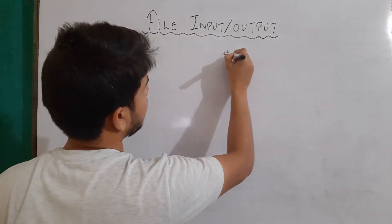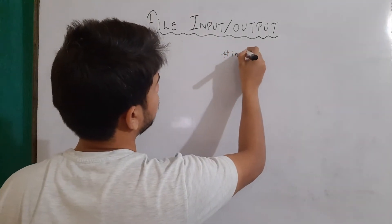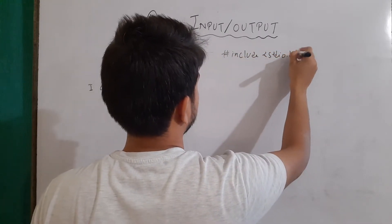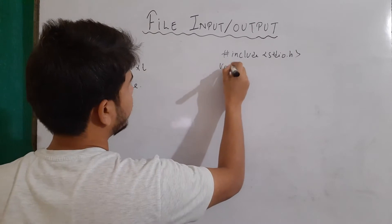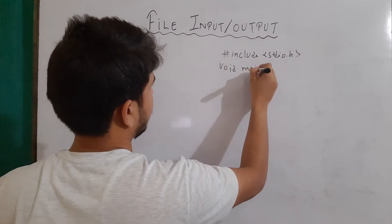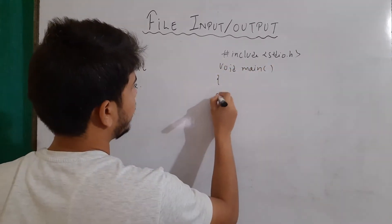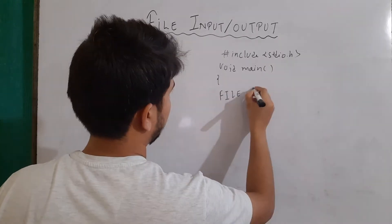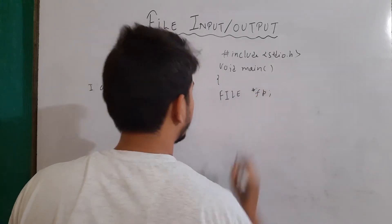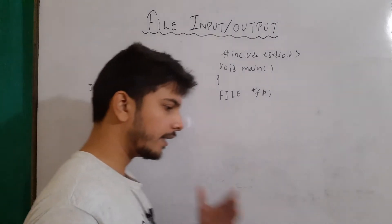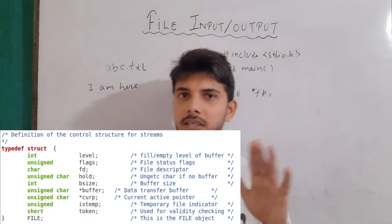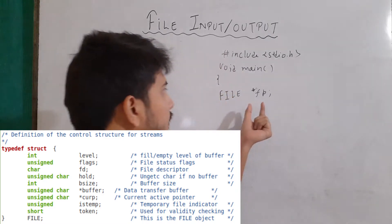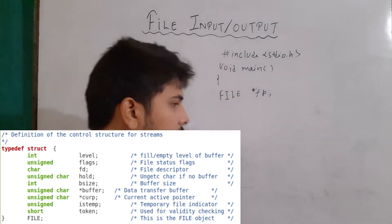First of all, I'll write here #include stdio.h. Then void main. And after that, I will create a pointer of structure FILE. Now you can see on the screen that FILE is a structure. FILE is a structure and we are making a pointer variable of that structure.